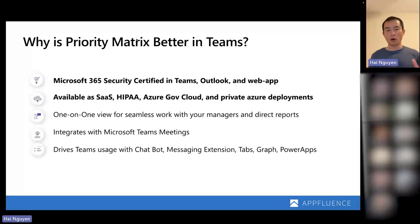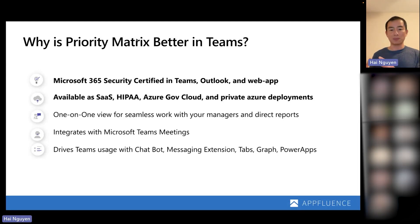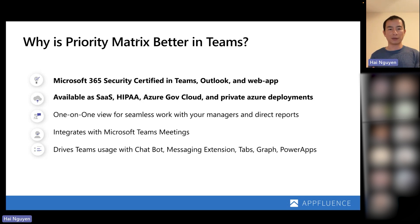I'll be showing you the one-on-one view where you can have a seamless work collaboration experience with your manager or your direct reports — something that's extremely unique within Priority Matrix. We also integrate with Teams meetings. When you're in a Microsoft Teams meeting, you can pull up your Priority Matrix as an agenda, and we automatically create tasks for you to see what things are relevant to the people involved in the meeting. We also drive Teams usage with our chatbot, messaging extensions, tabs, Graph, and Power Apps.